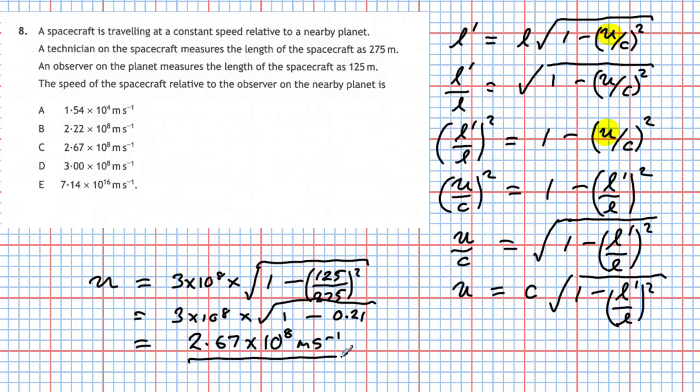That's a real fraction of the speed of light, sufficient to show relativistic phenomena. Our answer is 2.67 × 10⁸ metres per second — answer C. The important thing with this type of question is to be comfortable rearranging; it's a very difficult rearrangement, so practise going from the basic equation all the way to isolating the speed u.